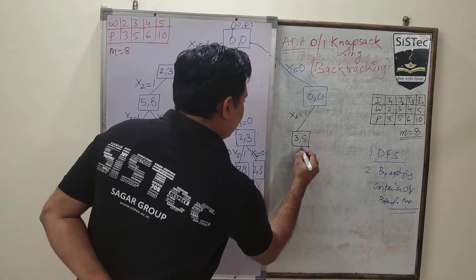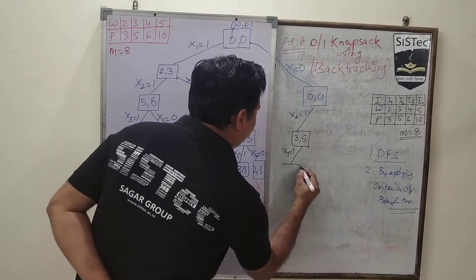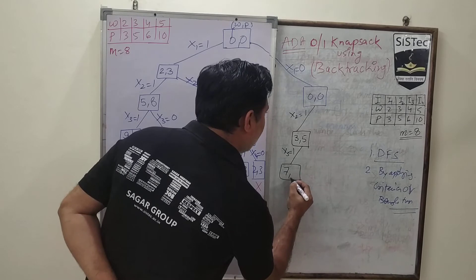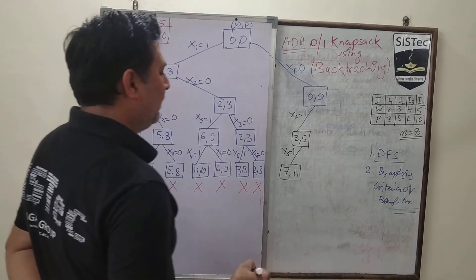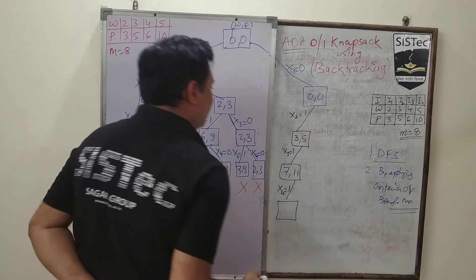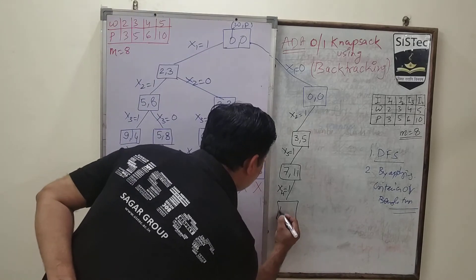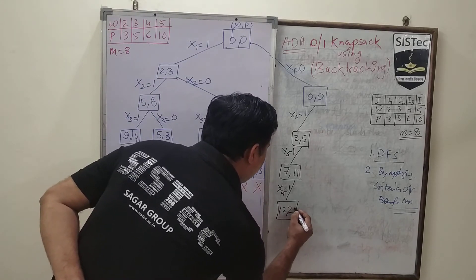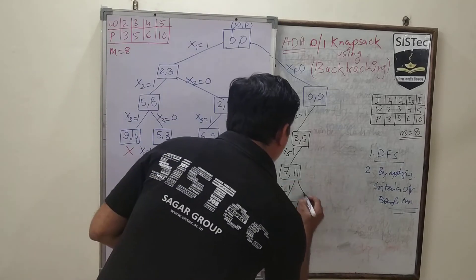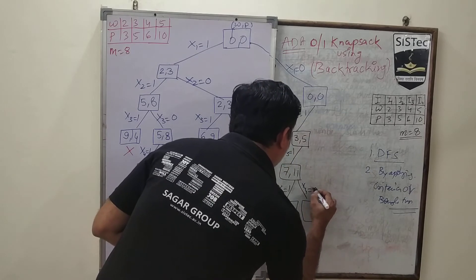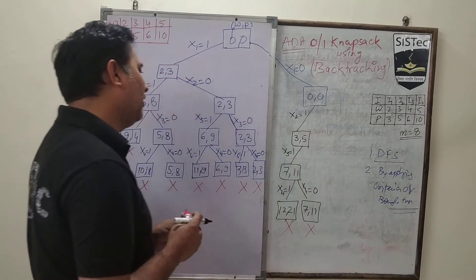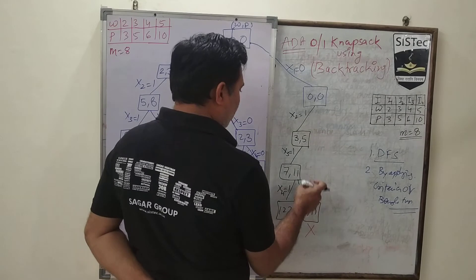After considering the 2nd weight, we will consider the 3rd weight. The 3rd weight is 4, making total weight 7 and profit 11. The capacity still has space left. So we will consider the 4th one. When we consider the 4th, the weight value becomes 12 and profit value is 21 — we exceed the capacity, so we discard it. Remaining at weight 7, profit 11 with no more weight left, this does not give us a solution.